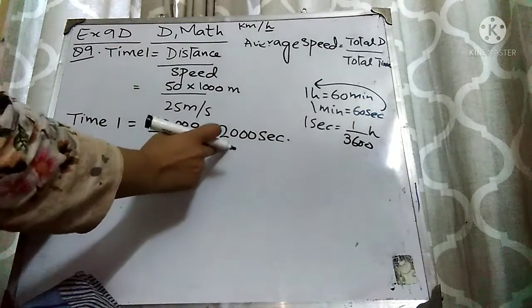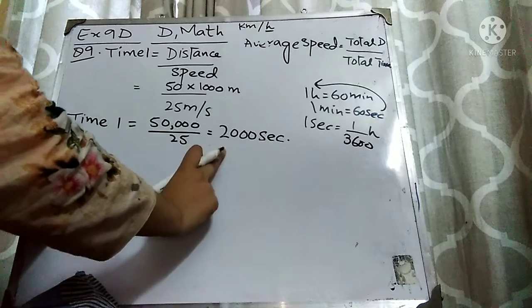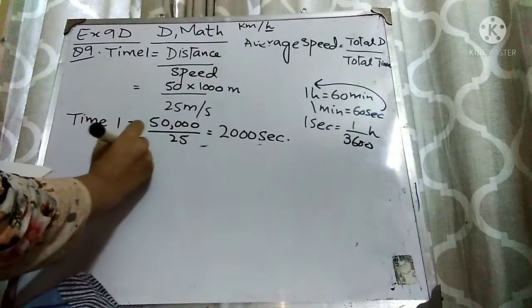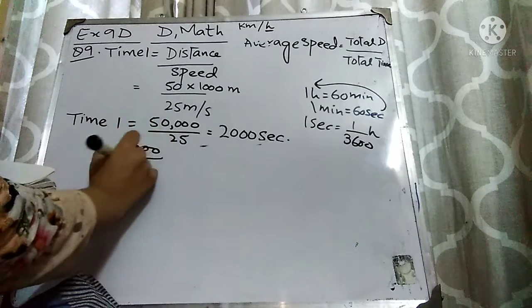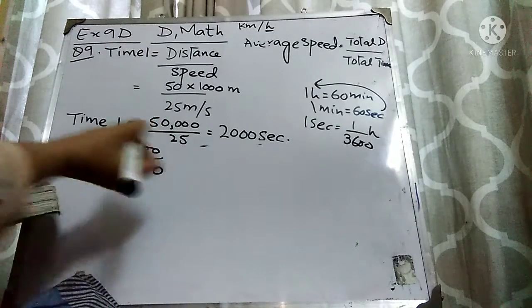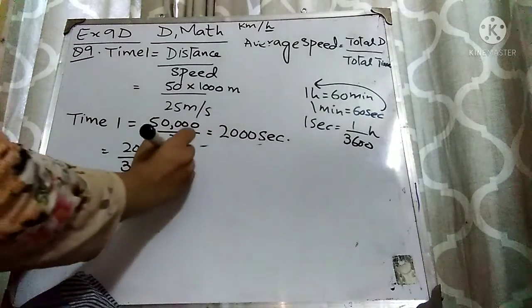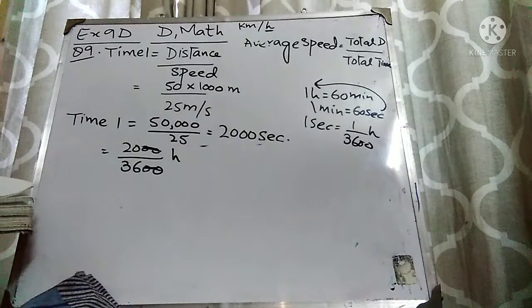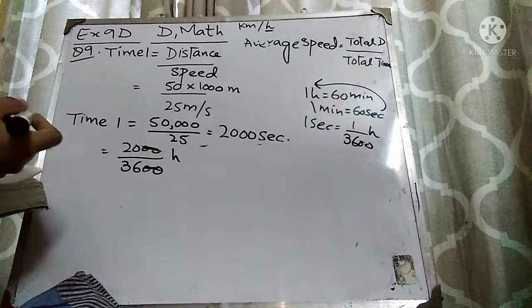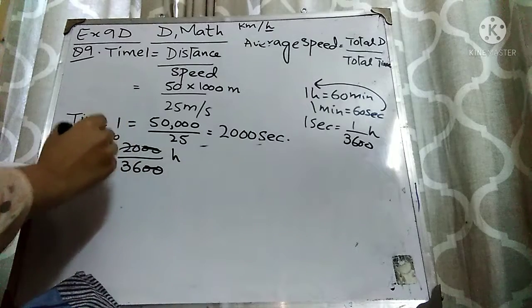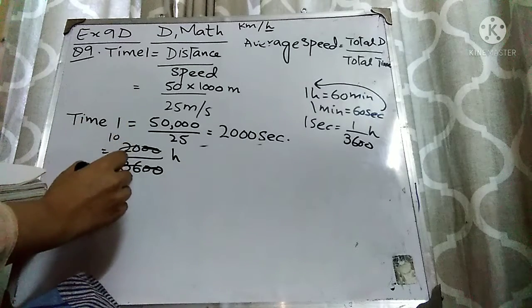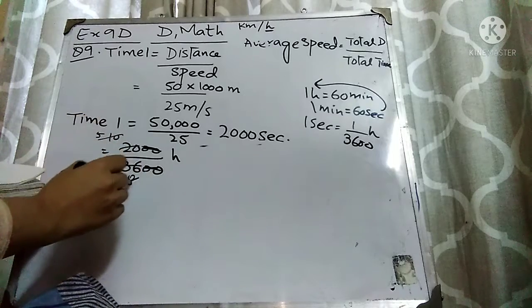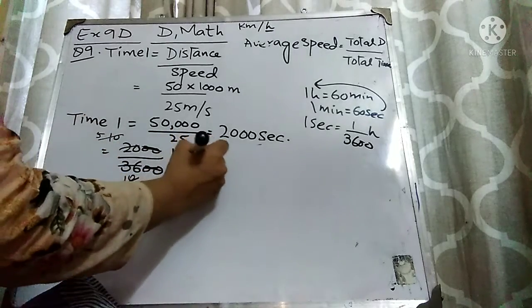I will convert 2000 seconds into hours by dividing by 3600. The two zeros cancel with two zeros, and simplifying further with a factor of 2, I get 5 over 9 hours. So Time 1 is 5/9 hours.